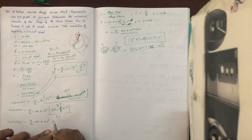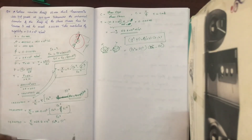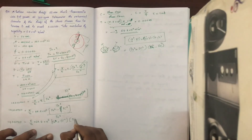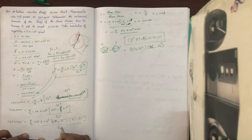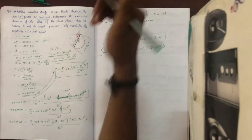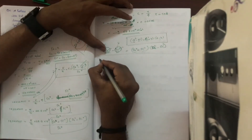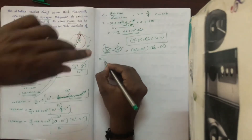We expand D_o raised to 4 minus D_i raised to 4. This gives us D_o² plus D_i² all times D_o² minus D_i². Now since the shaft wall is 20mm thick, D_i equals D_o minus 2 times 0.020, so D_i equals D_o minus 0.04 m.